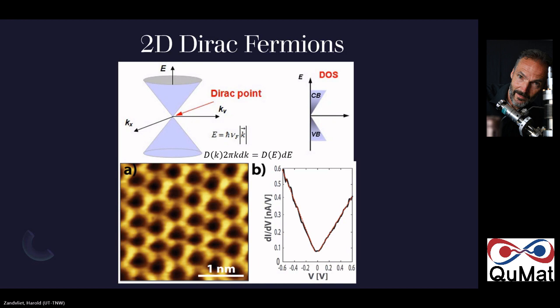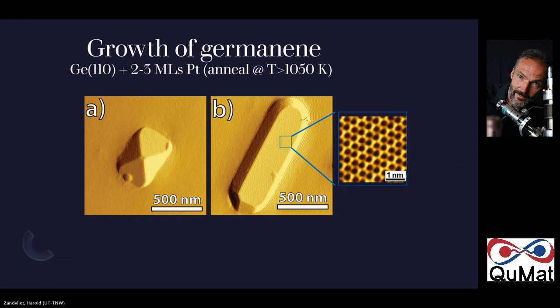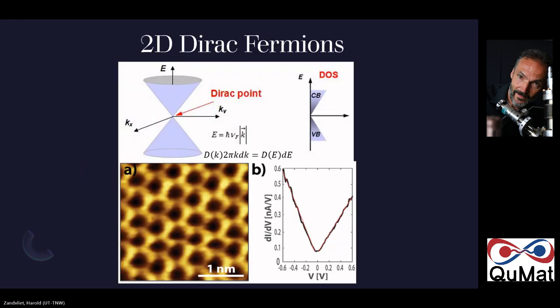We did these experiments already in 2011–2012 but did not fully understand what we had. Later we realized it was Germanene. The first evidence came from spectroscopy: for a Dirac cone system with linear dispersing bands in 2D, the density of states has a V-shaped appearance. Measuring differential conductivity with STM in STS mode — which is proportional to the density of states — we observed this V-shaped density of states, one of the hallmarks of a 2D Dirac fermion system.